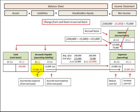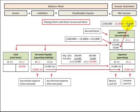Now if we look at the situation where our accounts payable decreased by $25,000 during the year, that means we'd have had $25,000 less in expenses. So we take our cash basis of $100,000 and subtract that reduction in expenses of $25,000, and we get $75,000 expense on the accrual basis.